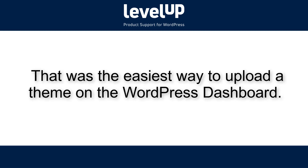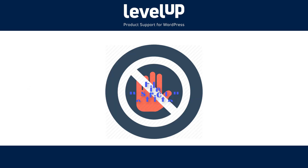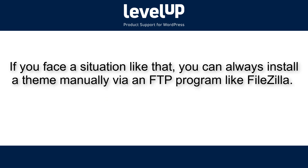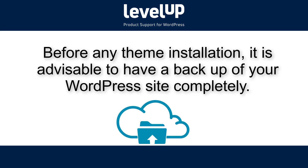So that was the easiest way to upload the theme. However, in some cases, your WordPress hosting provider may have file restrictions that could limit your ability to install a theme from the admin area. If you face a situation like that, you can always install a theme manually via an FTP program like FileZilla. But before any theme installation, it's advisable to have a backup of your WordPress site so that you have nothing to worry about in case something goes wrong.